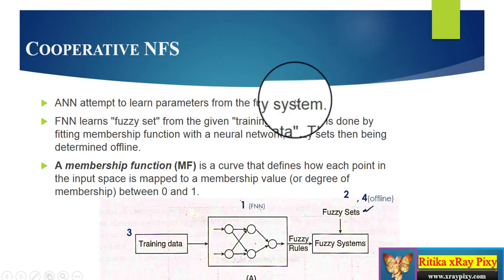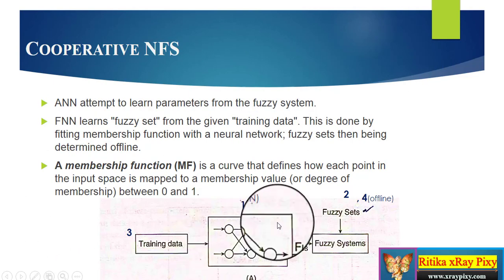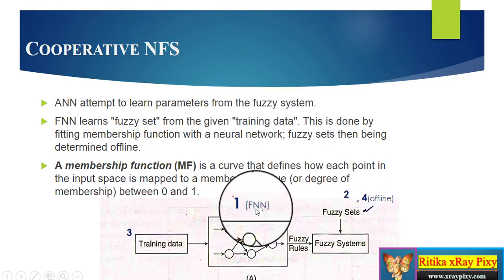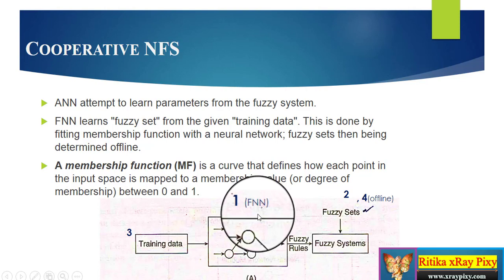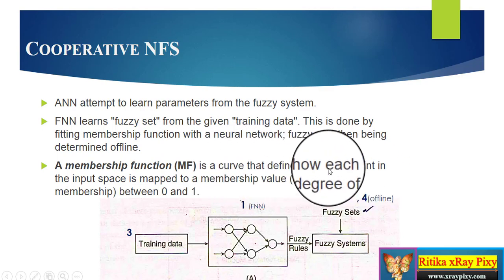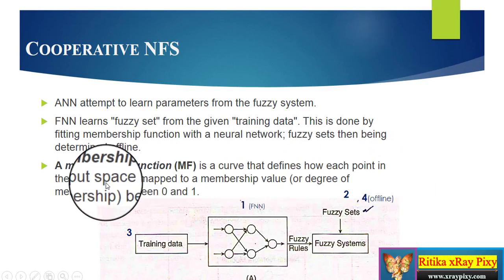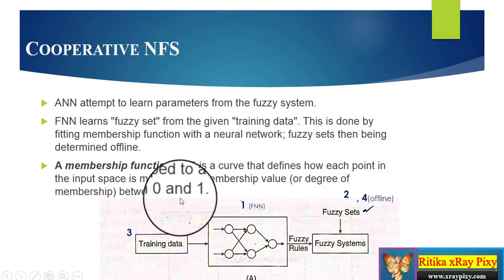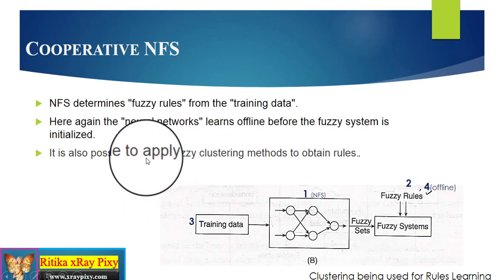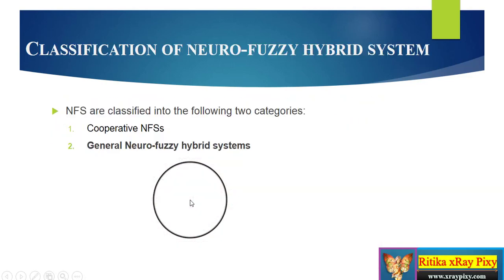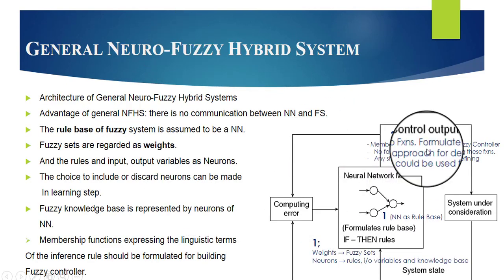This is how our model will learn — the ANN is learning from the fuzzy system. We give the training data to the fuzzy neural network and use a membership function, which is a curve that defines how each point in the input space is mapped to a value between 0 and 1. This is the training process.